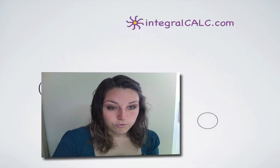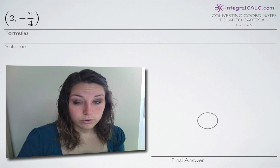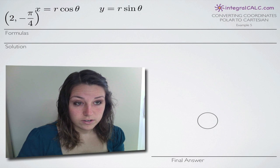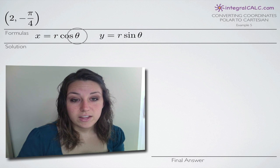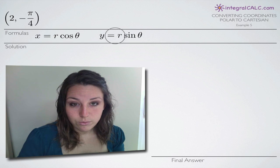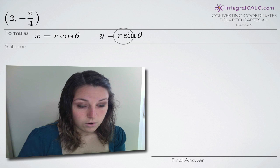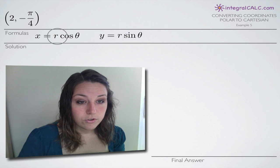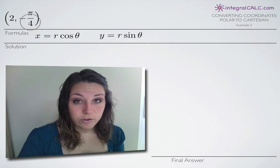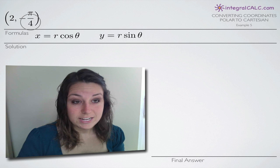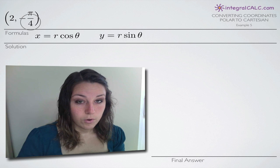The formulas we're going to use to convert these polar coordinates to Cartesian coordinates are: x equals r cosine of theta, and y equals r sine of theta. We'll use these two formulas to take our polar coordinates and convert them into Cartesian or rectangular form — same thing.